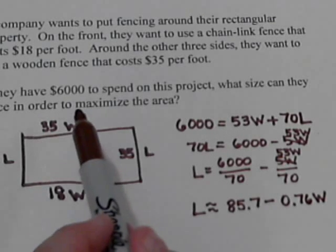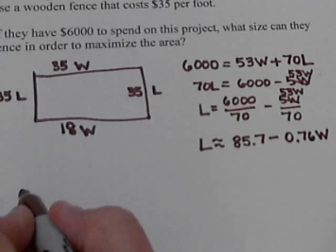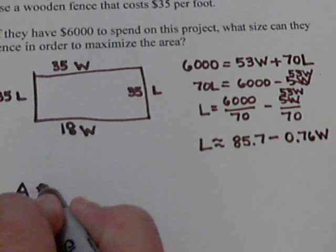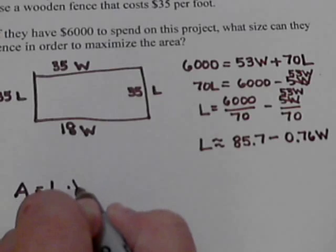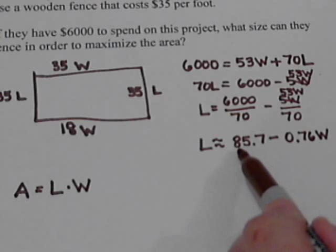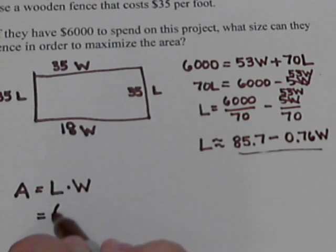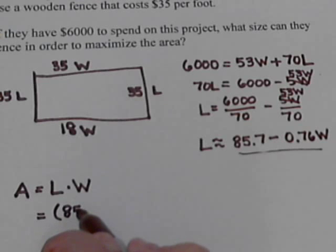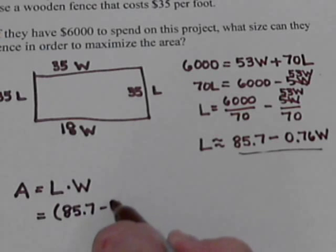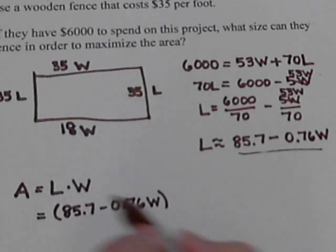So remember we wanted to maximize the area. So we need our area formula. Area equals length times width. But now, so we only have two variables. Instead of L, we're going to put all this in place of the L. So we're going to have $85.7 minus $0.76W times W.